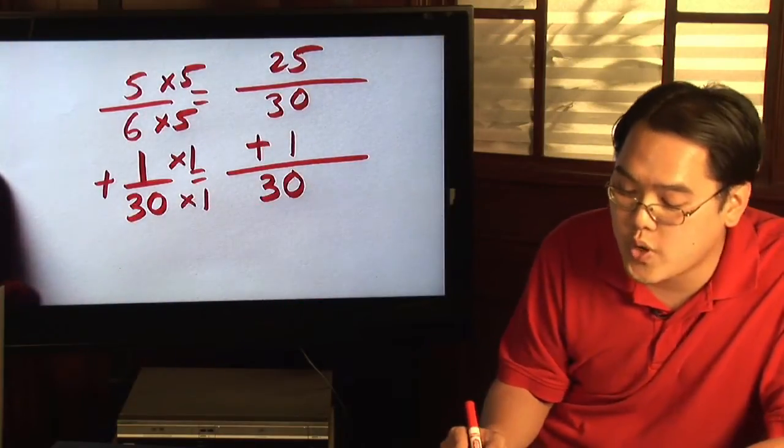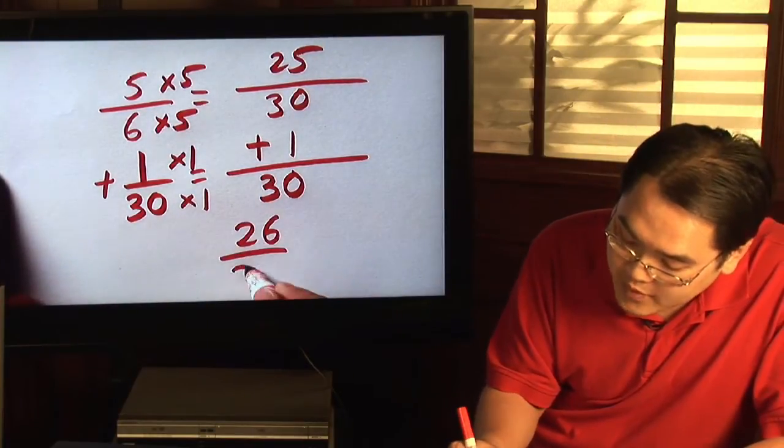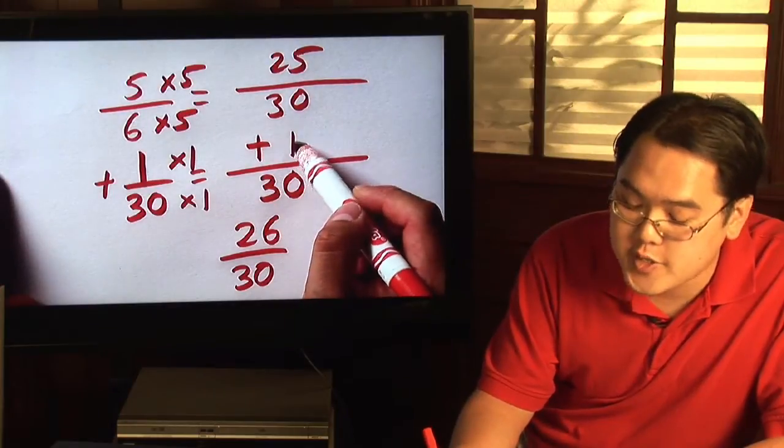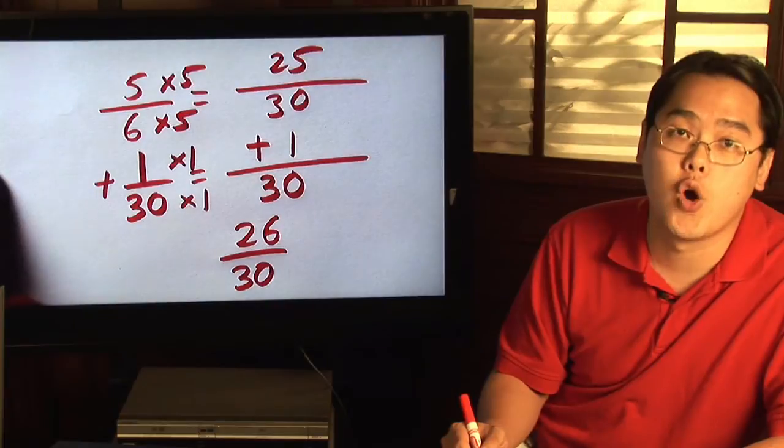And so, what you're really adding here is twenty-five thirtieths plus one thirtieth, and you get twenty-six over thirty. You add the numerators, but you always keep the denominator the same. And so you have twenty-six over thirty.